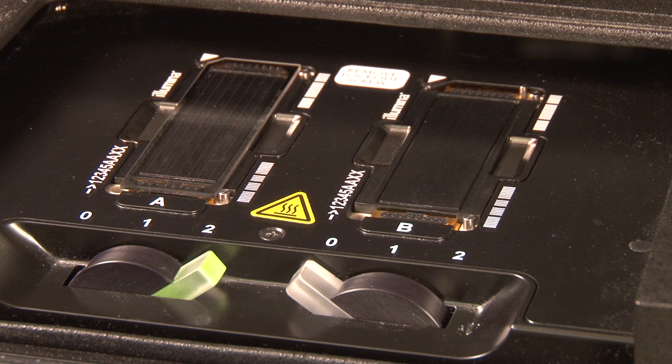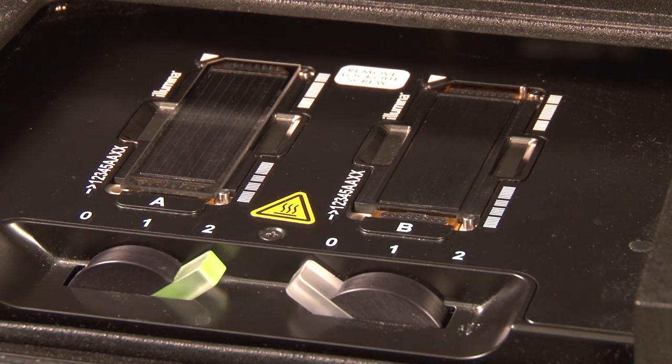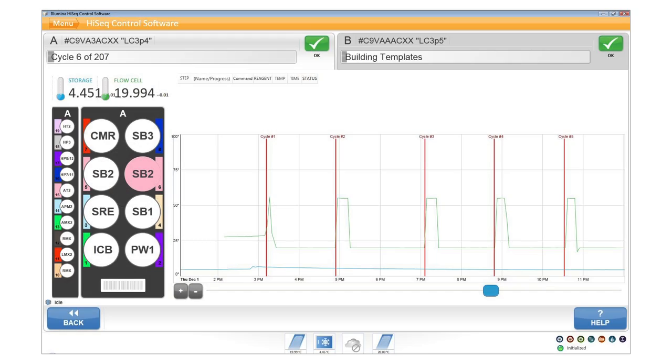The other thermal systems are the Peltiers, which are located underneath the flow cell stages. As the Peltiers cycle through a range of temperatures, the temperature profile is visible during the run on the temperature chart and also recorded in a temperature log file.